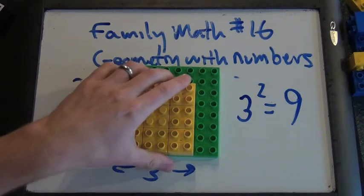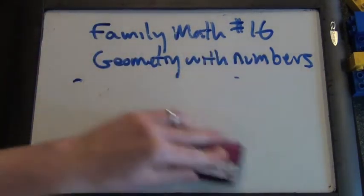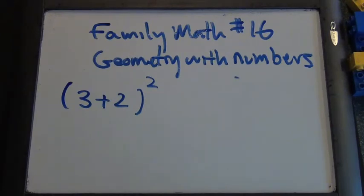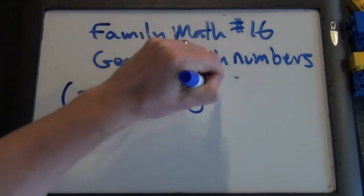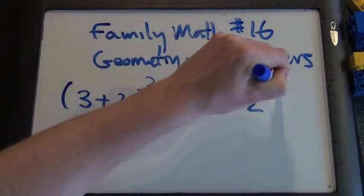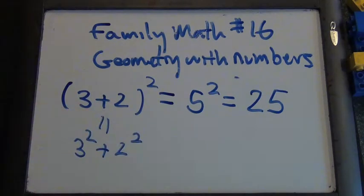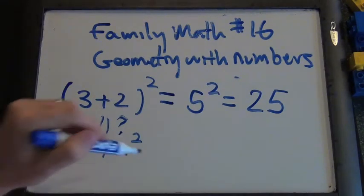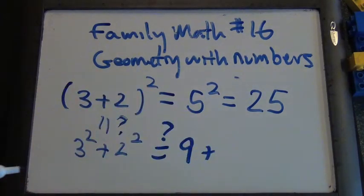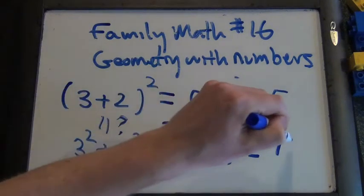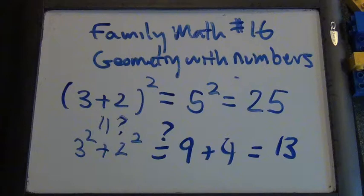Now we're going to look at something just a tiny bit more complicated: the equation three plus two squared. Who knows what three plus two is? Five. So this should be five squared, and what is five squared? Twenty-five. But I wonder if this is the same as three squared plus two squared. Three squared is nine, and two squared is four, so nine plus four is thirteen. That's not 25. So I wonder if there's any geometry with our Duplo blocks that can teach us about this.